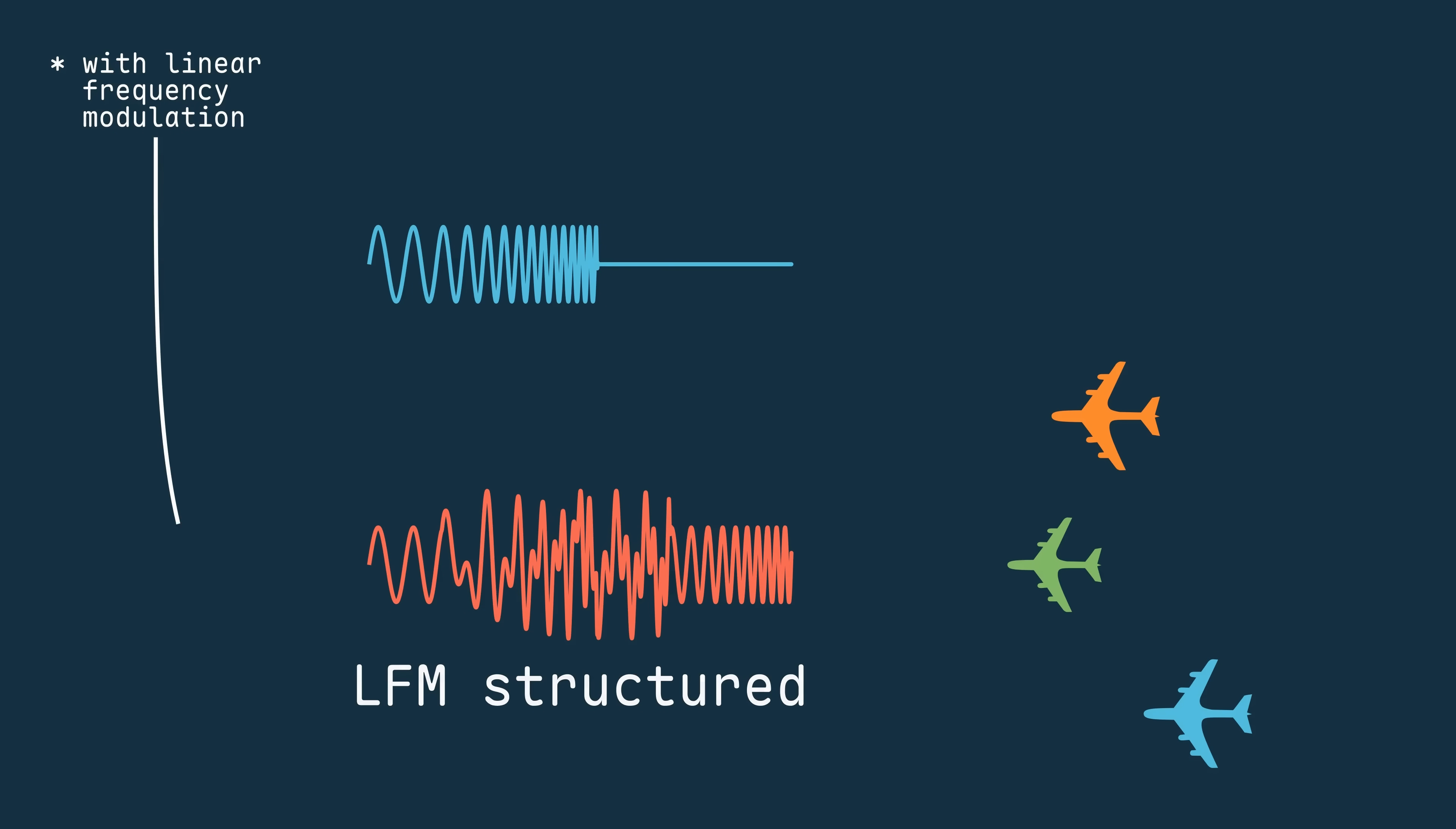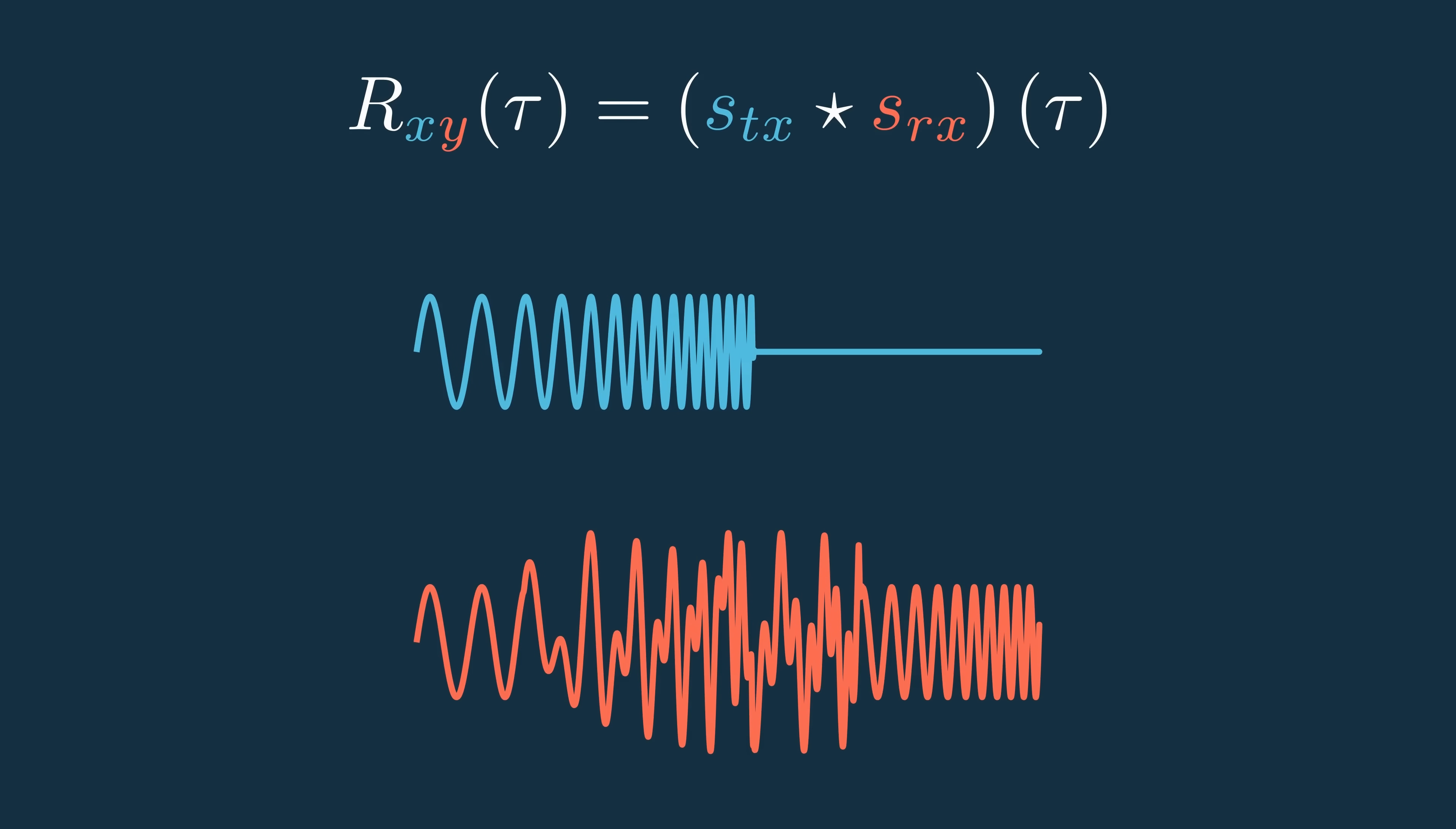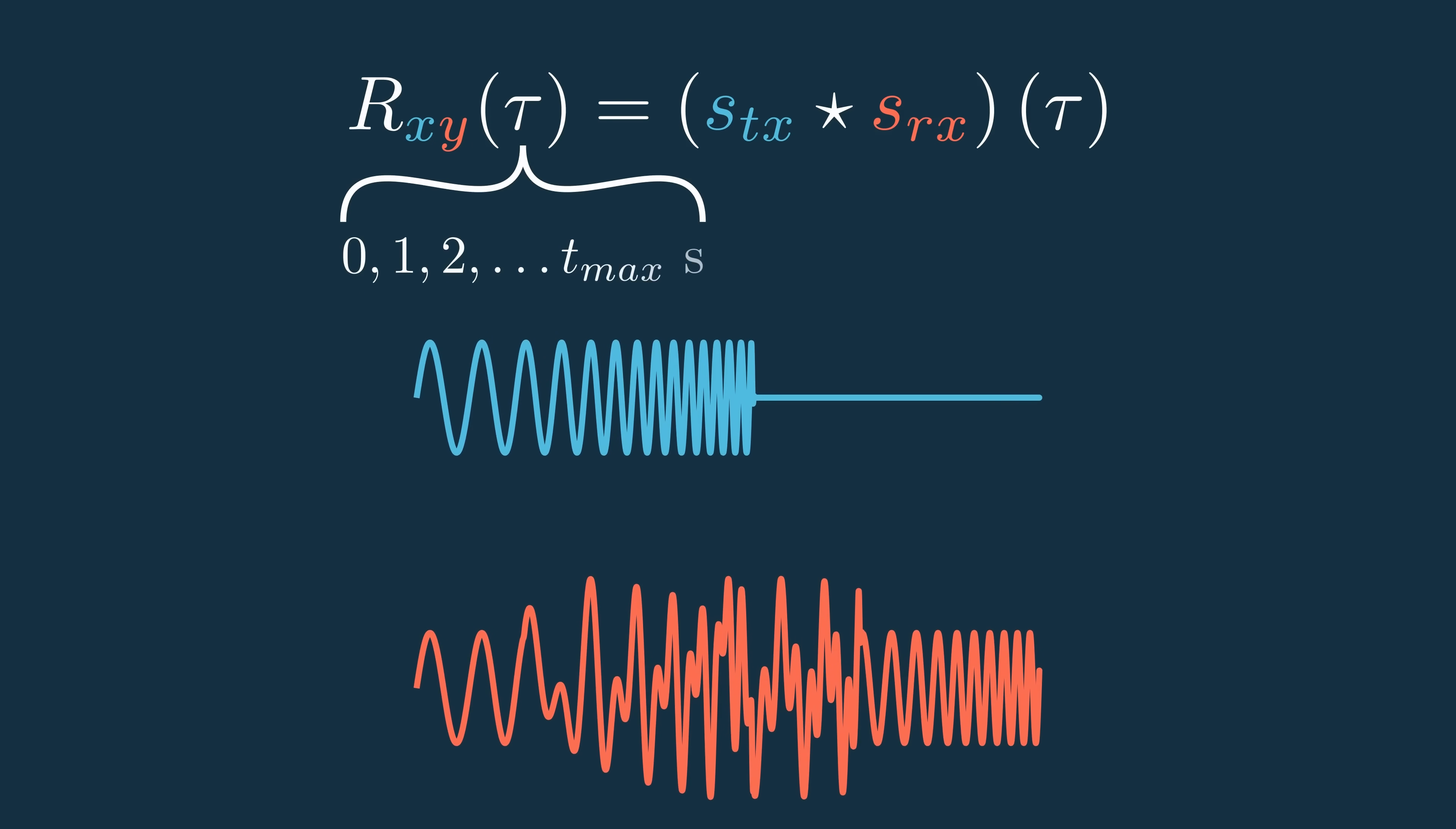But now that there is that underlying structure here, we can use something called the cross-correlation to find the points in time where there's maximum overlap. Let me show you what I mean.